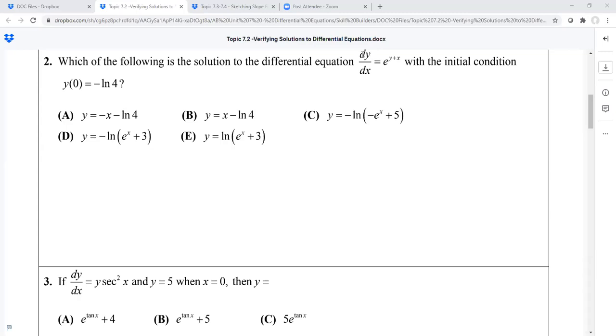So what I would do is I'm going to take this y of zero equals negative natural log of four and see if that gets rid of any of these problems A through E. So if I stick zero in for this A, I get zero minus natural log of four, which is what y is supposed to be. So it could be A.